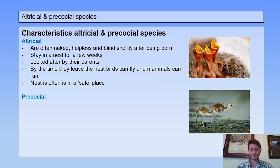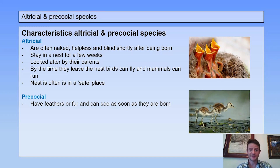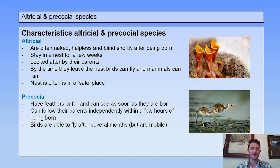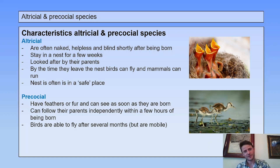Precocial species have feathers or fur and can see as soon as they are born. They can follow their parents independently within a few hours of being born. Birds are able to fly after several months, but after a few hours they are already mobile — little birds like these ones can walk within a few hours.